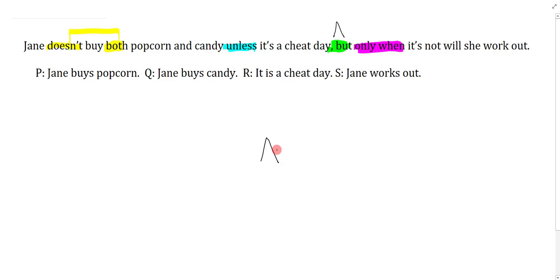After that I can just work on the left conjunct. Jane doesn't buy both popcorn and candy unless it's a cheat day. So not both is the form of this, so popcorn and candy - that's negation p and q or you could have used the alternate form negation p or negation q, and we can just use brackets to be safe.